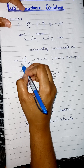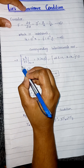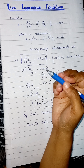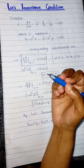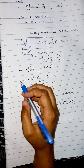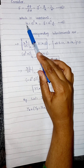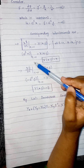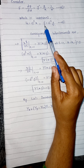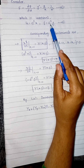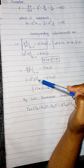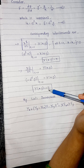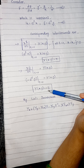The procedure for finding infinitesimals uses conditions derived from the infinitesimal transformations covered in previous lectures. If we take the partial derivative of x̄ with respect to epsilon we get the value of capital X, and similarly the partial derivative of ȳ with respect to epsilon gives minus e raised to minus epsilon. Substituting epsilon equal to zero, we get capital Y equal to minus y.